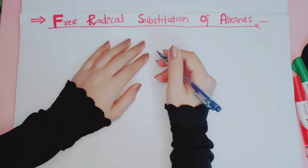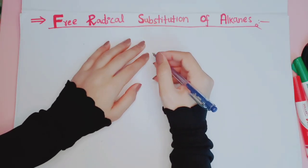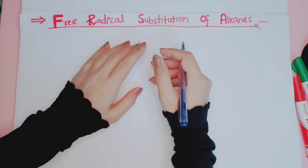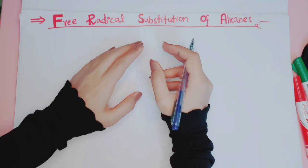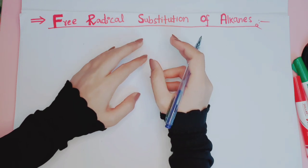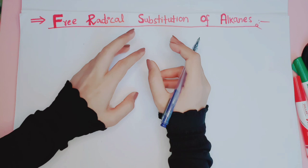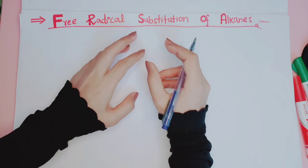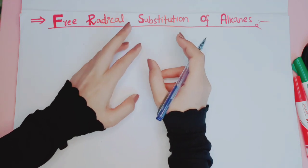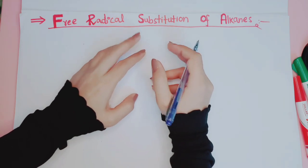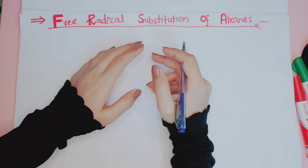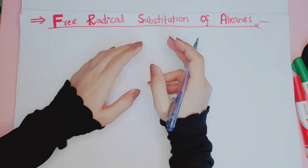Hi guys, welcome back to my channel. Today the topic of discussion is free radical substitution of alkanes. This is a very interesting, short, quick topic. We will take ethane, in which a single bond is present between carbon and hydrogen atoms, and those hydrogens will be replaced with a halogen — I'm going to take bromine, though you can take chlorine or any other halogen.